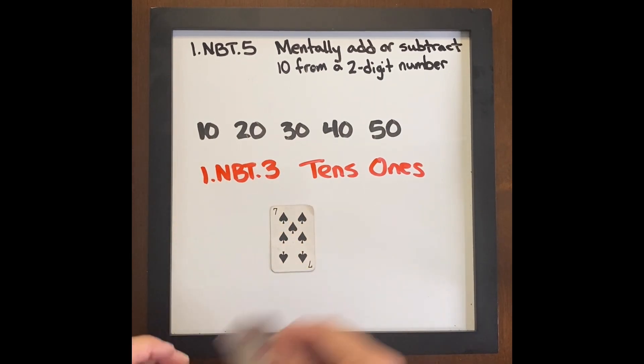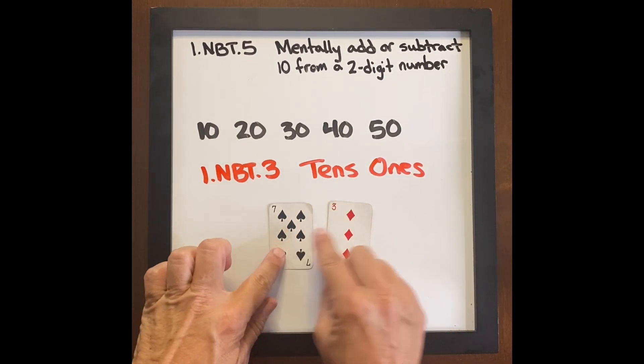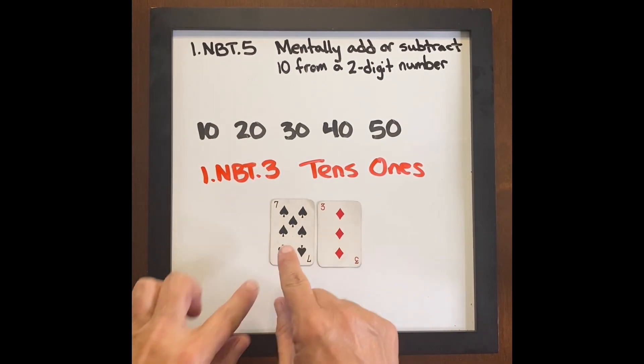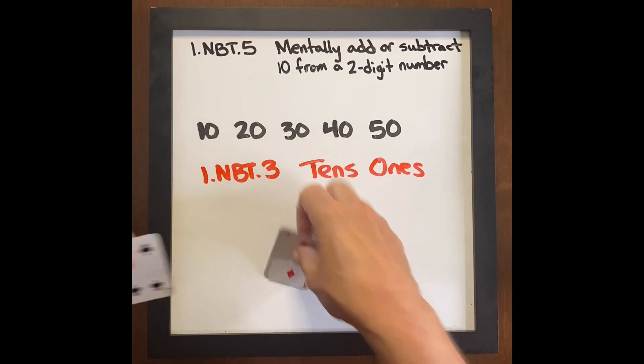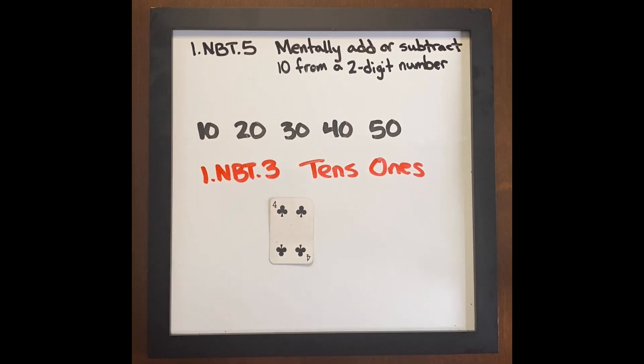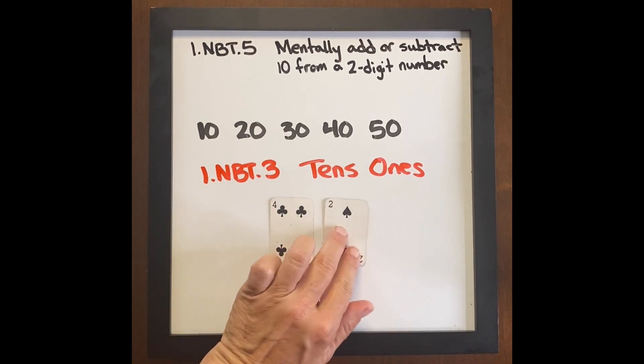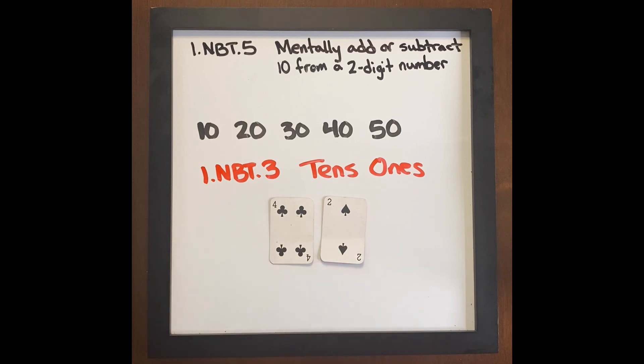For example, 73 is 7 tens and 3 ones. And 42 is 4 tens and 2 ones.